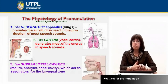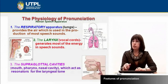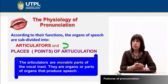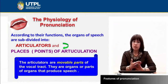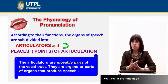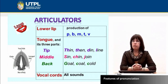For example, if you have a flu or difficulty breathing, your sounds like 'm' or 'n' won't sound correctly. According to their functions, all organs of speech are subdivided into articulators and places or points of articulation — this is a key difference in how sounds are produced and articulated. Articulators are movable parts of the vocal tract — organs or parts of organs that produce speech. The main articulators include the lips, especially important in production of sounds like p, b, m, t, and v.